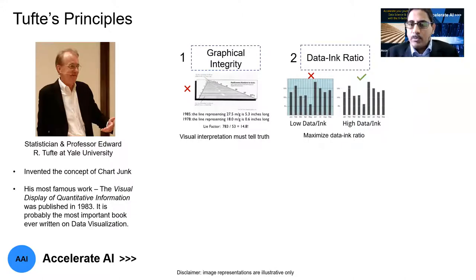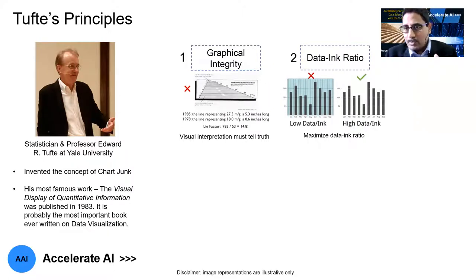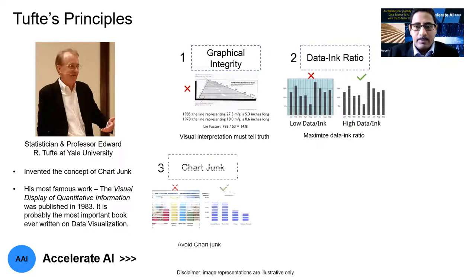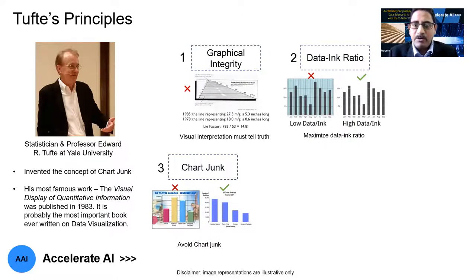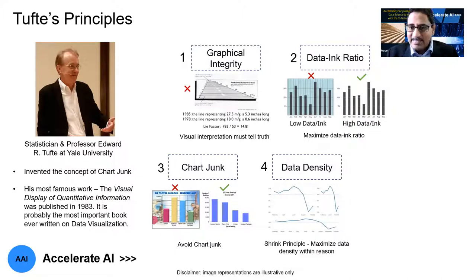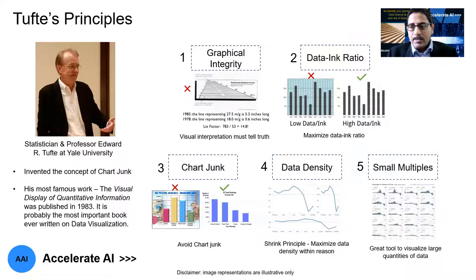Then there is the concept of data ink ratio — we always have the objective to maximize the data ink ratio. In the two chart examples shown, the left-hand side is a strict no-no, where you have too little data per ink ratio, but the right-hand side is good because we have a high data per ink ratio. The third principle is about chart junk — we have to avoid it. The same kind of data representation can be done in a very simple manner, and that should be followed. The fourth is data density — we have to maximize the data density within reason. And fifth is small multiples — a great tool to visualize large quantities of data.